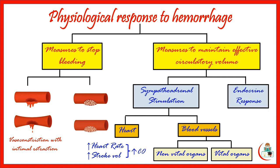Other measures include endocrine response. The renin hormone is released by the ischemic kidney and activates the angiotensin system. Angiotensin is a potent vasoconstrictor and stimulates secretion of aldosterone by the adrenal cortex, resulting in sodium and water retention. Also, the antidiuretic hormone or vasopressin is released by the posterior pituitary, leading to water retention.